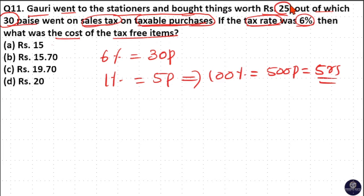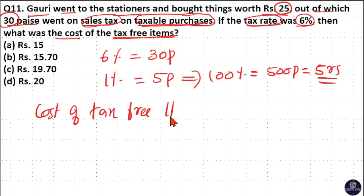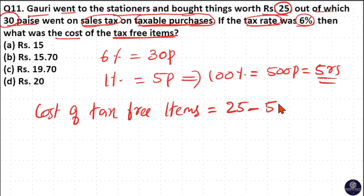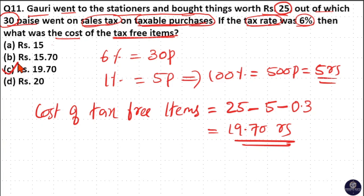Gauri totally purchased for 25 rupees, out of which 5 rupees is for taxable purchases and 30 paise went on sales tax. So the remaining is the cost of tax-free items. Cost of tax-free items equals total purchase 25 minus 5 rupees for taxable purchases minus 30 paise for sales tax, which is 0.3 rupees. The total is 19.7 rupees, so option C is your answer.